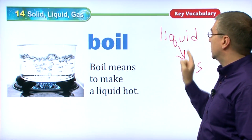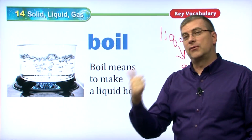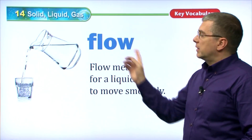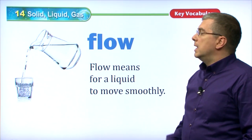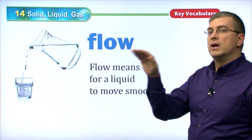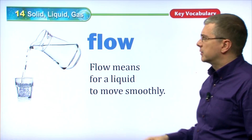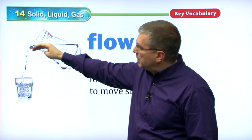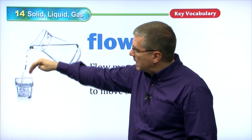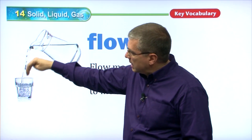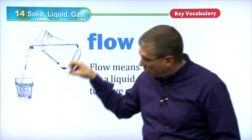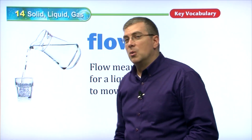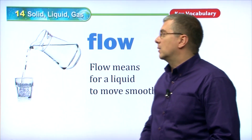So that is changing a liquid to a gas. We have freeze, we have melt, and we have boil. Flow — basically, flow means for a liquid to move smoothly. If you have a container full of water and you tip that container over, the liquid inside will flow smoothly and evenly into another container, or flow out all over the table or floor.